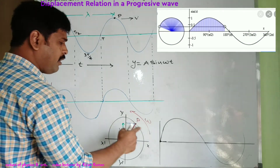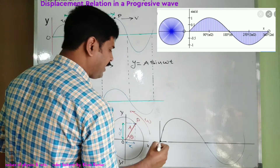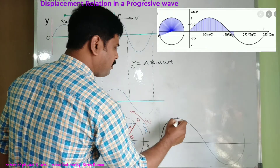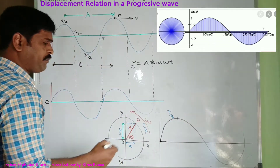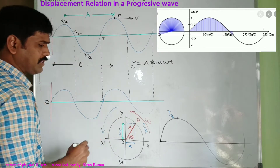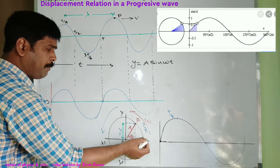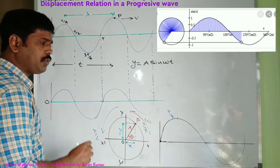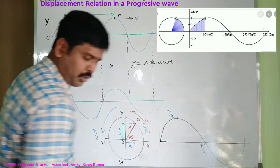The particle moving from x to y takes time t/4. Similarly, from y to x-dash also takes t/4. So from x to x-dash, the time taken is t/2.